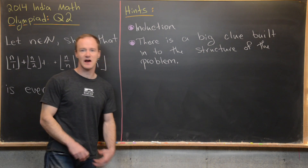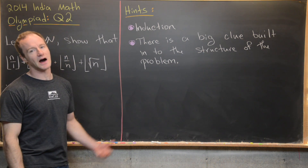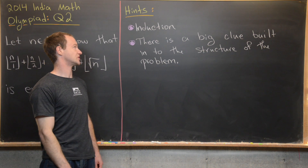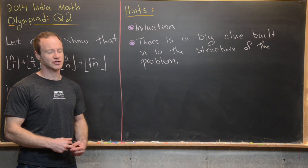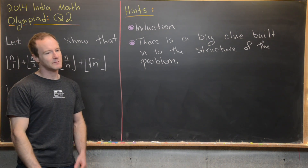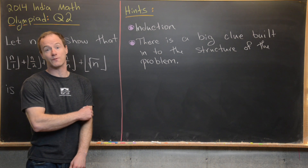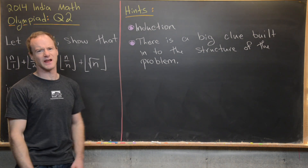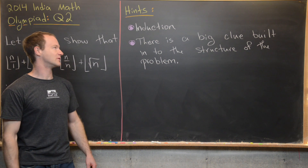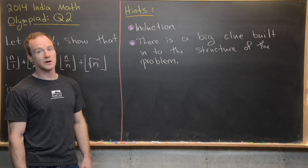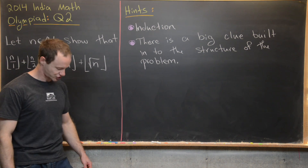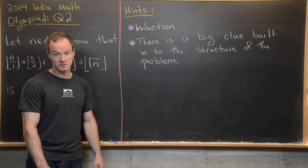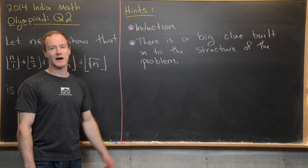Some hints: the first is to use induction, since we have something depending on natural numbers. There are slicker ways to do this, including a nice geometric solution, but induction is the most straightforward method. Another hint: there is a big clue built into the structure of the problem, which we'll point out when we look at the solution.